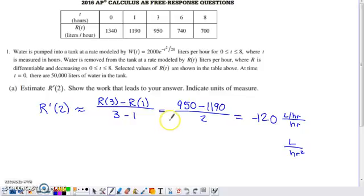You want to know an estimate for R'(2). You can't find R'(2) because you don't know the function R(t). But what you can say is, if I find the average rate of change of R on the interval from one to three, that's going to be a pretty good estimate for the instantaneous rate of change at the value smack dab in the middle of that interval.